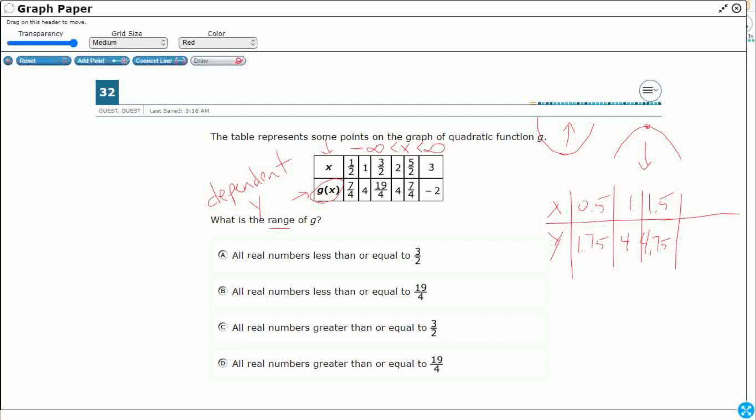What else do we have? We've got 2 and 4. 5 halves, that's going to be 2.5. And then that's going to be that 7 fourths again, that's going to be 1.75.